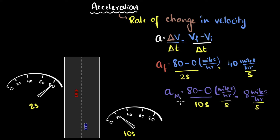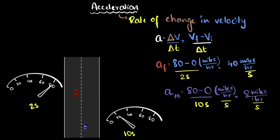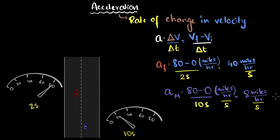So look, even though both cars have the same change in velocity, Ferrari is able to change that velocity much more quickly, giving it a higher acceleration. And that's what this number says: per second, Ferrari picks up about 40 miles per hour of velocity, whereas my car per second only picks up about eight miles per hour of velocity.